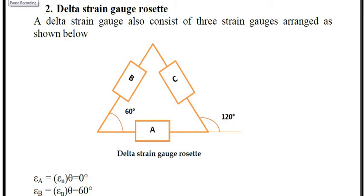In my last lecture, I have seen different types of strain gauge rosette. The rectangular type I have already seen. The next one is the delta strain gauge rosette.